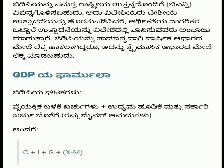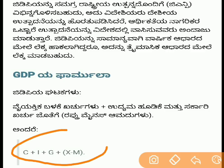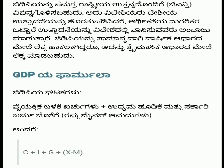So the GDP formula is: Consumption plus Investment plus Government spending plus Exports minus Imports. This is the standard GDP formula. The components are: Consumption, Investment, Government, Export minus Import — that gives us GDP.